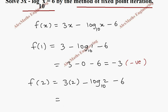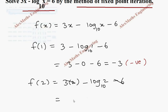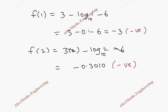For f of 2, the 6 and minus 6 cancel, and we need the value of log 2 base 10, which is 0.3010. So f of 2 equals minus 0.3010. We still need a sign change, so let's go for the next higher value, f of 3.